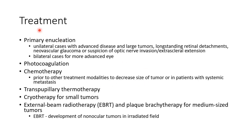Regarding the treatment of retinoblastoma, primary enucleation can be done for unilateral cases with advanced disease and large tumors, for long-standing retinal detachments, neovascular glaucoma, or suspicion of optic nerve invasion or extrascleral extension. Primary enucleation is also done in bilateral cases for the more advanced eye.